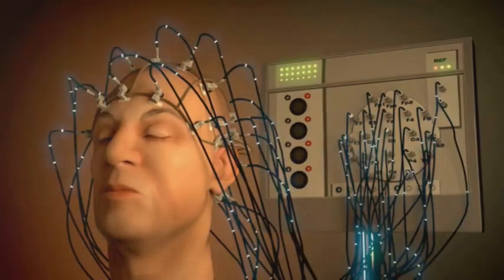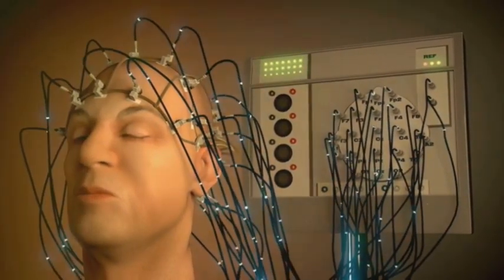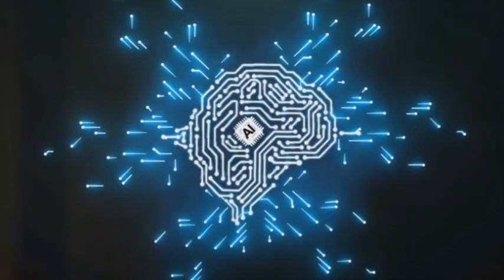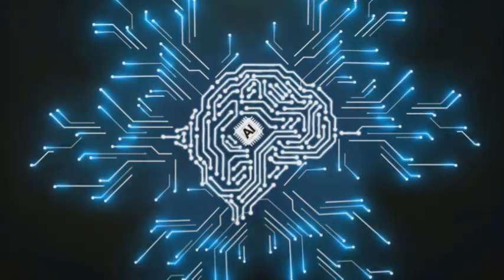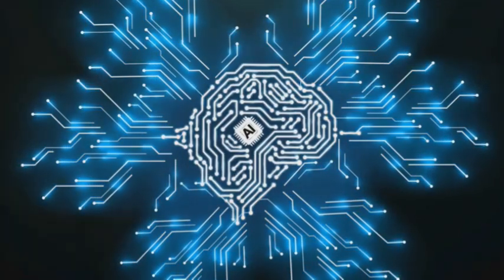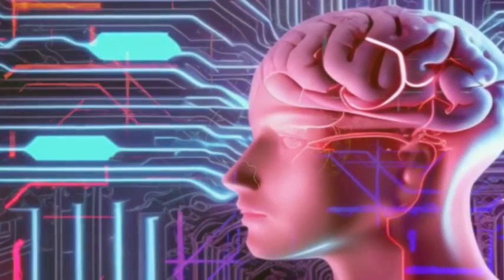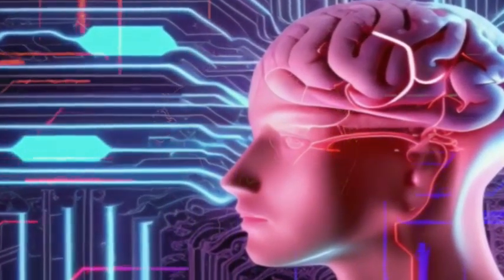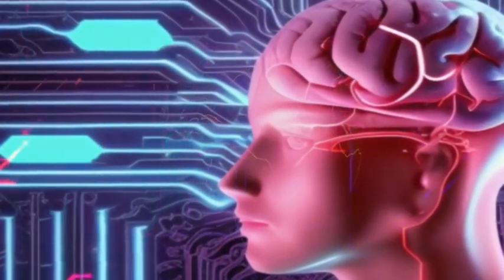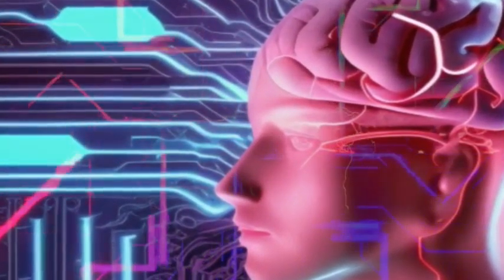The inception of Neuralink was rooted in Musk's profound concern about the rapid advancement of artificial intelligence. He feared that AI could one day surpass human intelligence, leaving us in the dust. But what if we could keep up? What if we could enhance our cognitive abilities to match or even exceed those of AI? This was the seed of an idea that led to the birth of Neuralink.